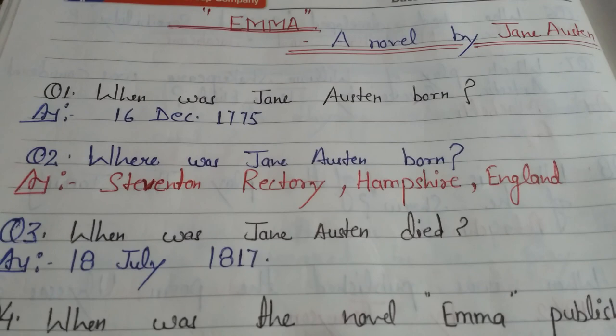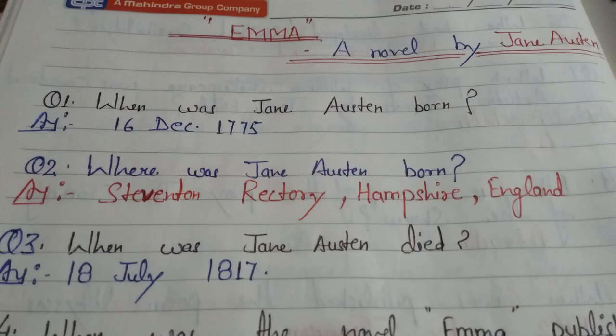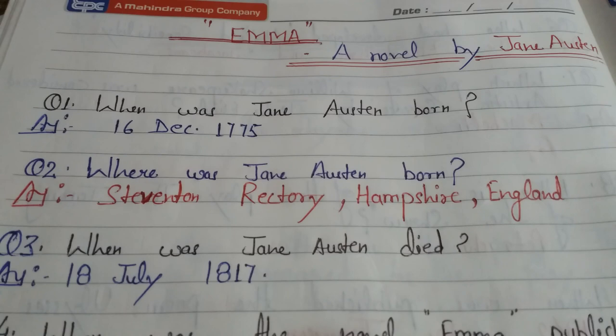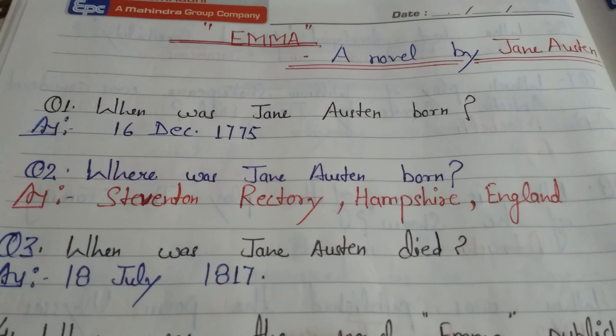Question 1: When was Jane Austen born? Jane Austen was born on the 16th of December 1775. Jane Austen ka janam 16 December 1775 ko hua tha.